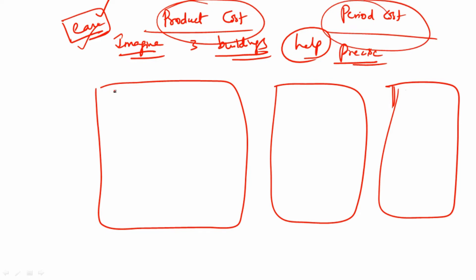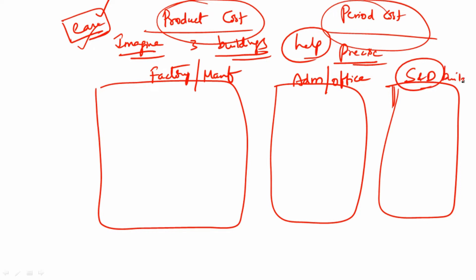The first building we're going to call it the factory building or manufacturing building, where all the manufacturing activities happen. The second building is the administration building, also called the office. The third building is the selling and distribution building. This imagination is only for ease of understanding the concept of product cost and period cost.